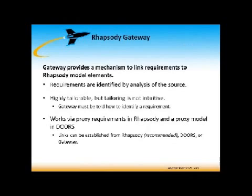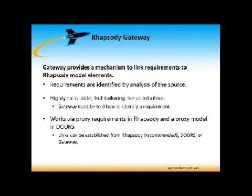Let's start with Gateway — a mechanism to provide the linking between requirements and Rhapsody design model elements. To do that, a couple of things have to happen. You have to identify the type of analysis, in other words, the way to identify a requirement in whatever source you're going to. We're going to focus on Doors today, and it comes with four different types of analysis methods, and you can define your own. We're going to take one of them, which is illustrative of how it works for all of them.